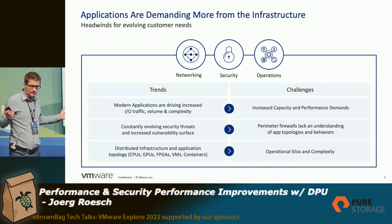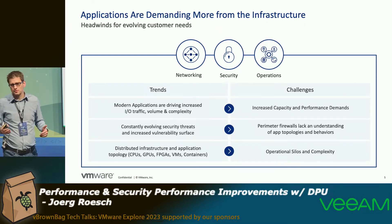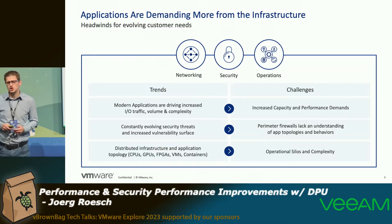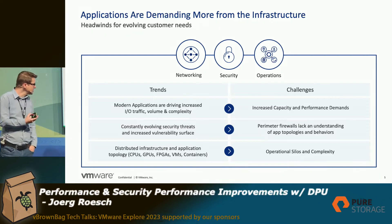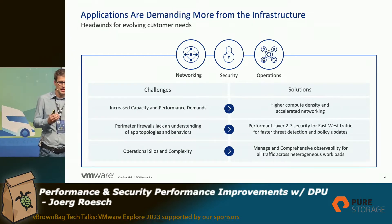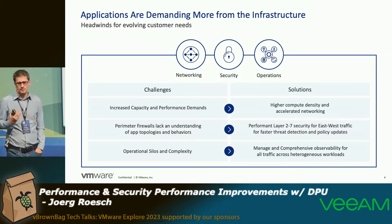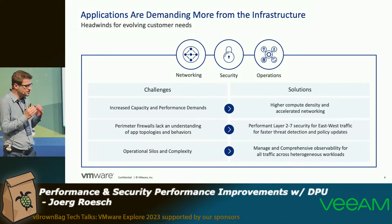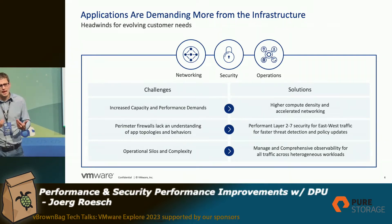On the other hand, we have not only VMs — we have containers, DPUs, CPU requirements, GPUs, especially when we are talking about the AI world. This all ends in operational silos and complexity. So how can we solve this? At the end of the day, we need higher compute density and accelerated security. We need a performant layer 7 security, and we need to take care about security between containers, VMs, and bare-metal servers, with one management plane to establish this.